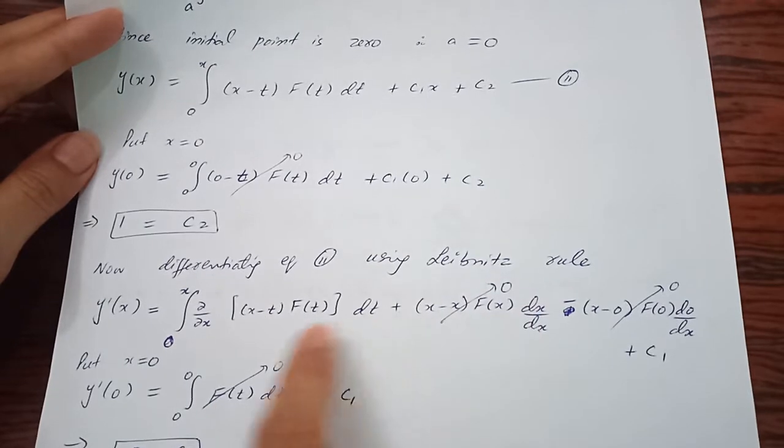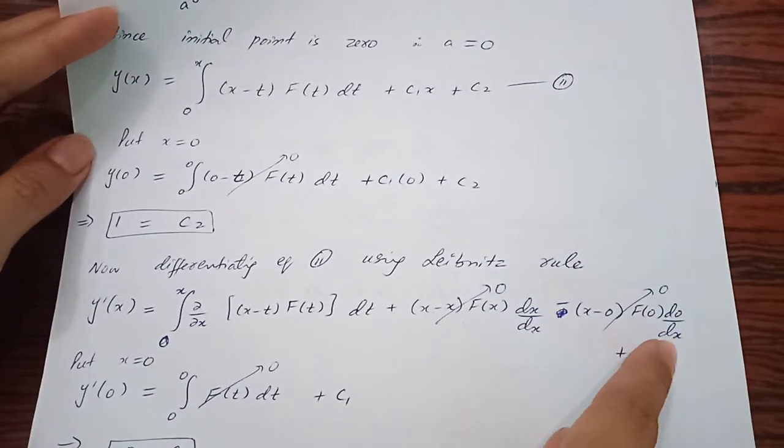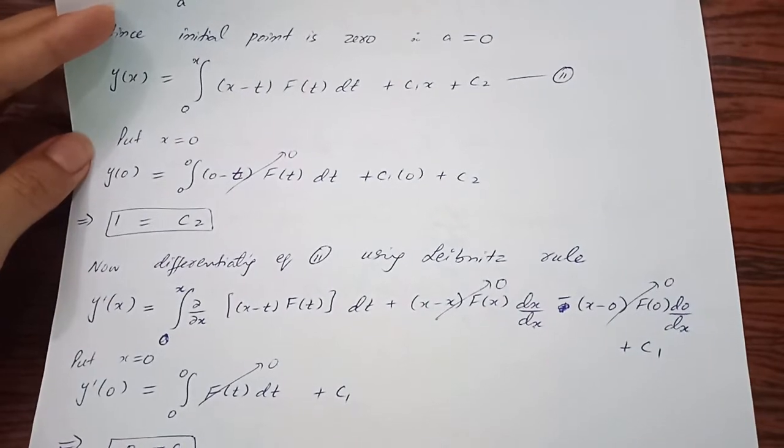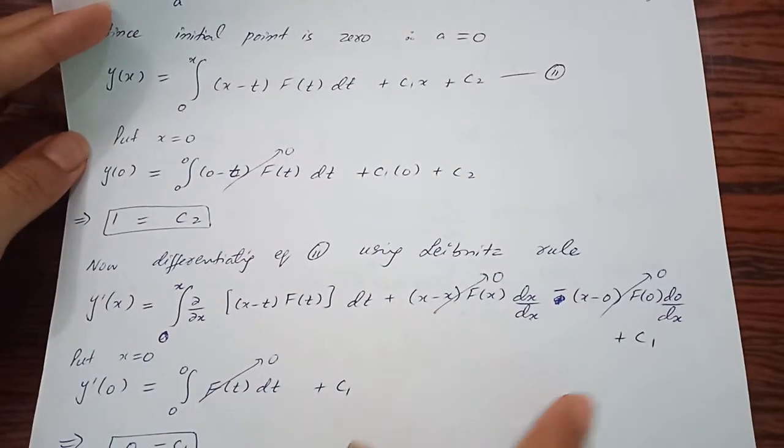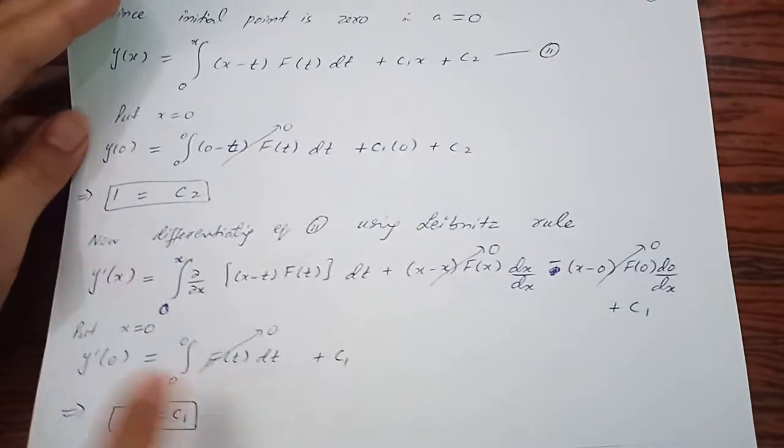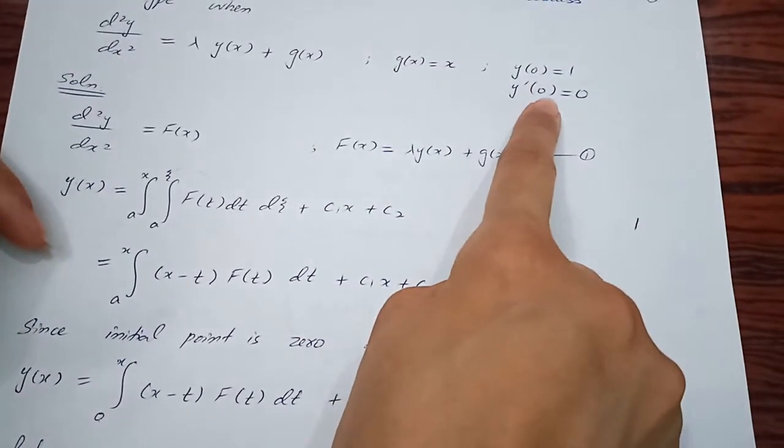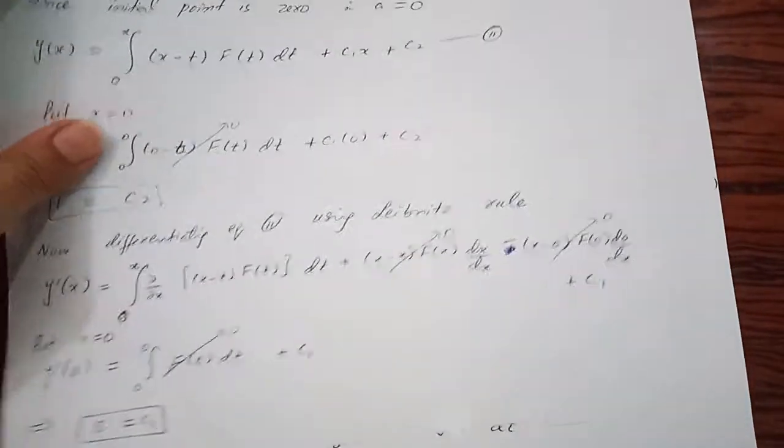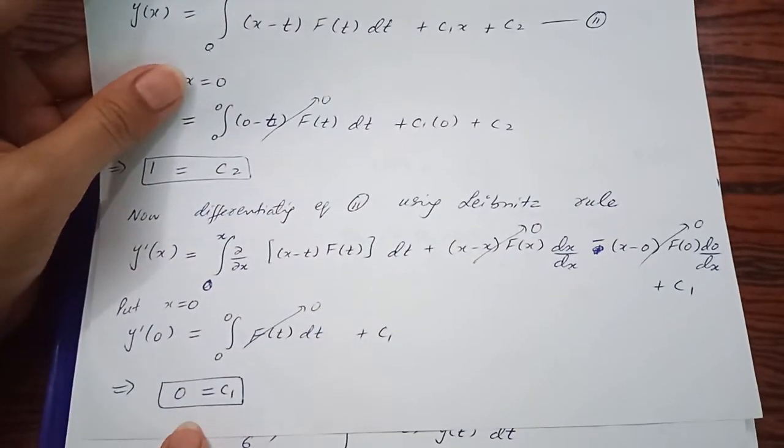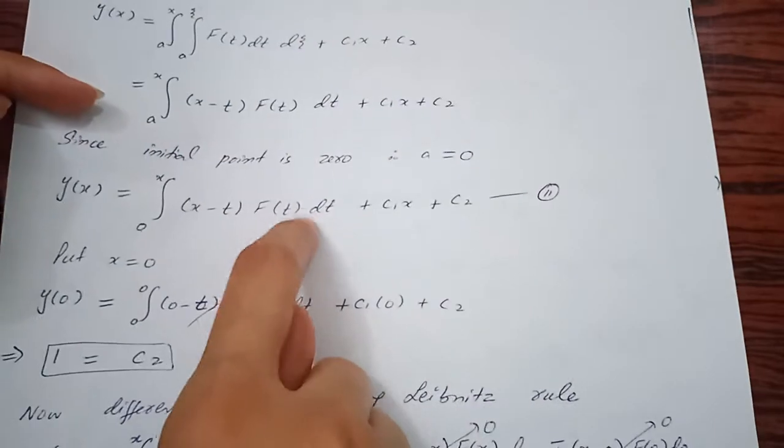Minus replacing t with the lower limit and derivative of lower limit with respect to x, and at the end the constant c₁. Put x = 0. When you take the derivative, you're left with c₁. Using condition y'(0) = 0, you get c₁ = 0. Plug both constants into y(x).